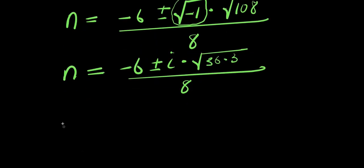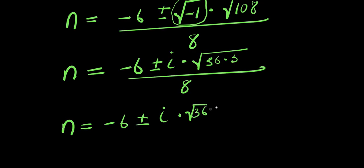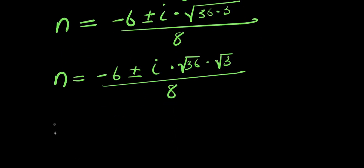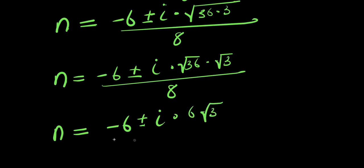So n equals negative 6 plus or minus i times square root of 108. We simplify: 108 equals 36 times 3, so square root of 108 equals 6 root 3. Thus n equals negative 6 plus or minus 6i√3, all divided by 8.